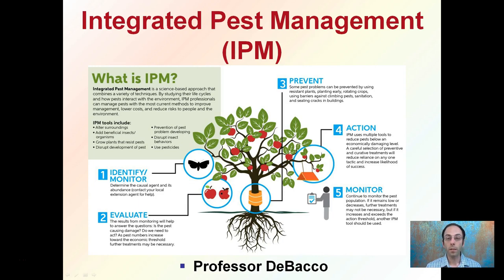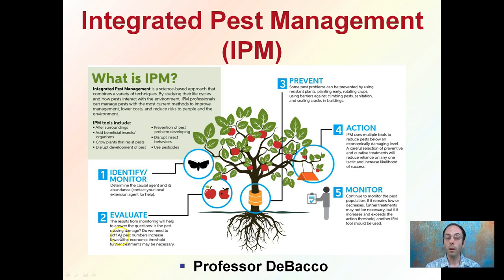Here we're looking at Integrated Pest Management, which is abbreviated IPM. This involves the integration of identifying and monitoring for causal agents, evaluating based on those monitors of what's going on, trying to prevent some of the pest problems from occurring, taking action when needed, and then monitoring the end result to see if any part of this needs to be repeated again.